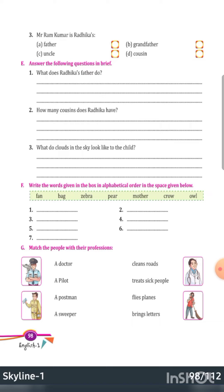So going through the alphabet: number one is bag, number two is crow — sorry, C comes before F, so crow is number two — number three is fan. Continuing: M — mother is number four; O — owl is number five; P — pear is number six; and zebra is number seven.